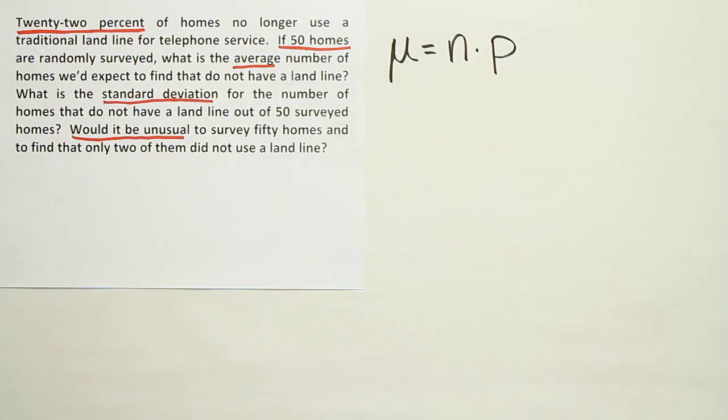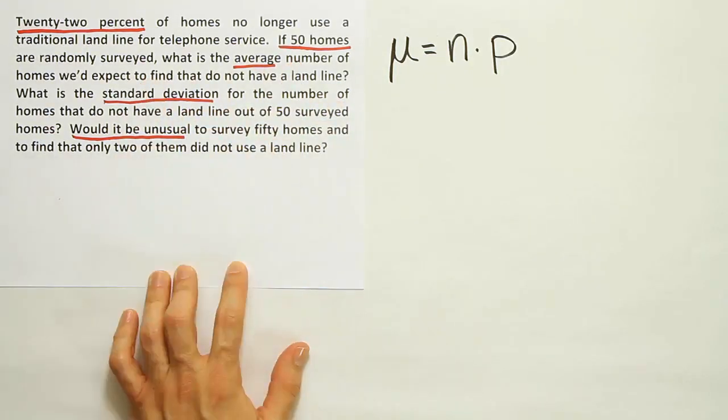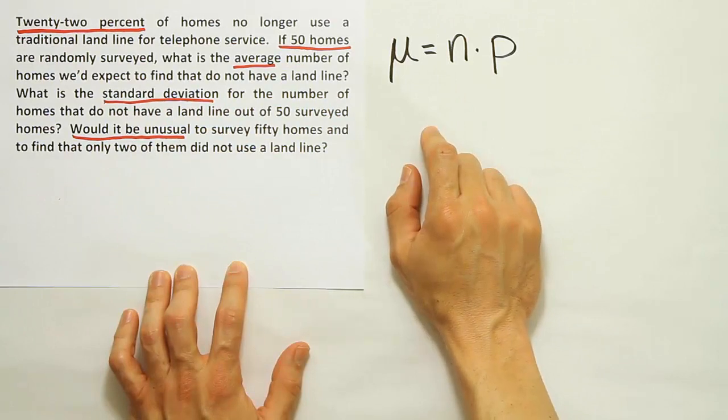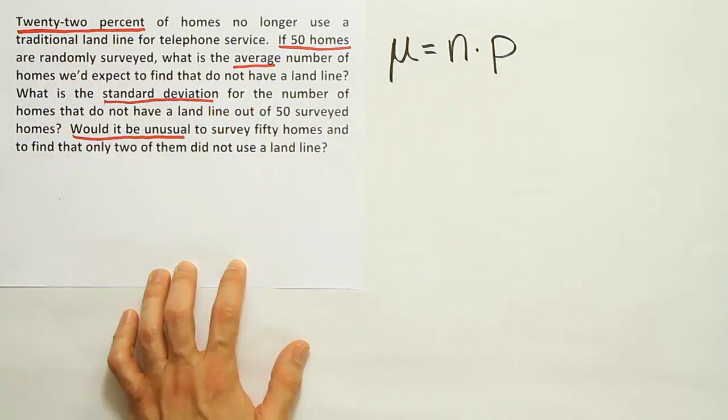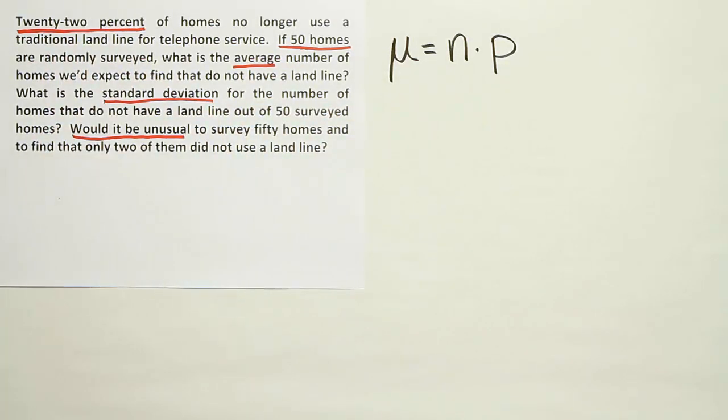You should go through and check to make sure it is binomial in nature. We can say 50 homes are going to be surveyed, so that's a fixed number of trials. We have a constant probability of success. 22% of homes no longer use a traditional landline for telephone service.